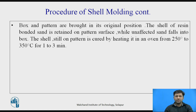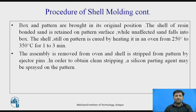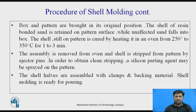The box and pattern are then brought back to the original position. The resin-bonded sand shell is retained on the pattern surface while unaffected sand falls back into the box. The shell is cured by heating in an oven at 250 to 350 degrees centigrade for about 1 to 3 minutes. The shell is stripped from the pattern by ejector pins, and a silicon parting agent may be sprayed for clean stripping. The two shell halves are assembled with clamps and backing material, and the shell mould is ready for pouring.